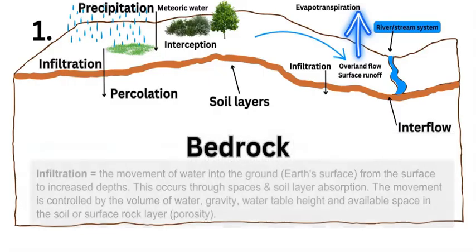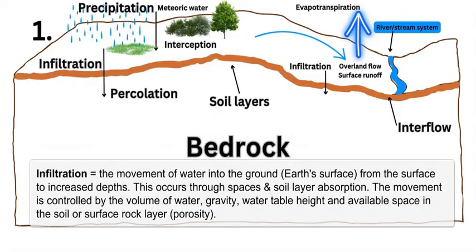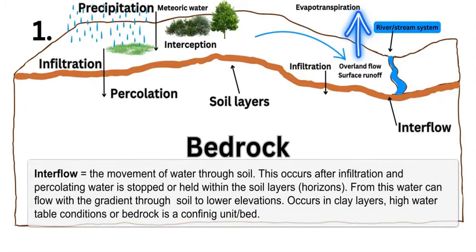Then we have infiltration — this is the key part for groundwater. How water infiltrates the soil depends on soil type, compaction, the amount of rain, and the prior moisture level in the soil, all of which dictate how much water moves through the soil to deeper layers through gravity. Then we have interflow, which is water moving through the soil without going into bedrock and without being surface runoff, just flowing downhill through the soil itself.